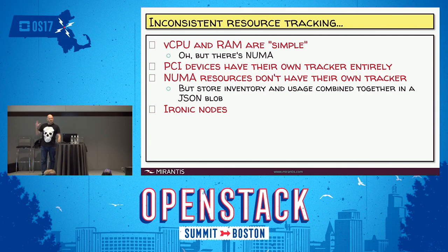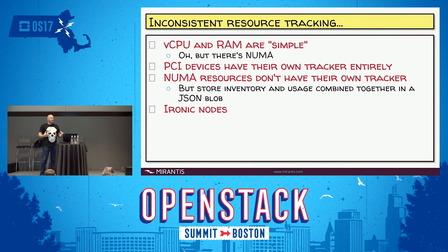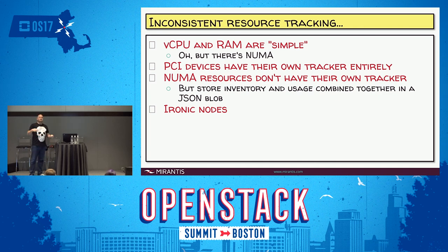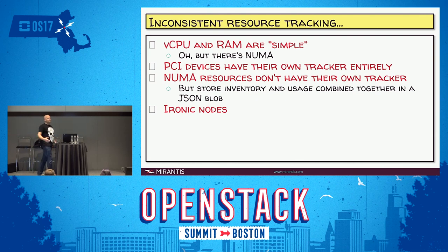And then there's Ironic — I'll just leave it at that. Ironic nodes are essentially indivisible units. Normal compute nodes cut up their resources for vCPU and pass them out to a bunch of different consumers. Ironic nodes are completely different — an instance booted on a bare metal Ironic node gets the whole thing, not just some CPU from the bare metal node. So we kind of have to view Ironic bare metal nodes as atomic, indivisible types of things.